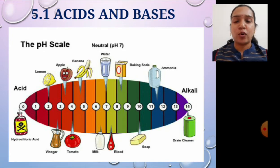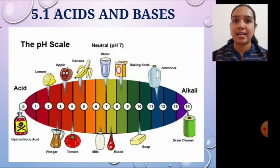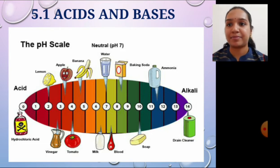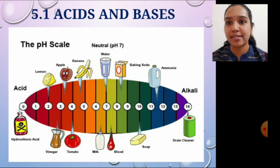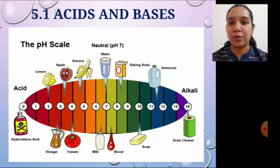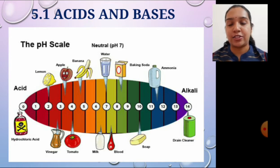At 14 on the scale you can see drain cleaner. Bleaching powder, which we discussed as an example of a base, is highly basic in nature. Other substances are also mentioned on the scale indicating their pH value and whether they are acidic or basic in nature.